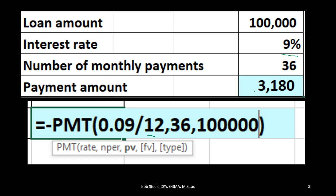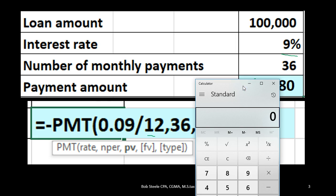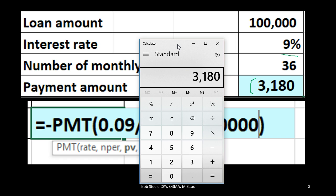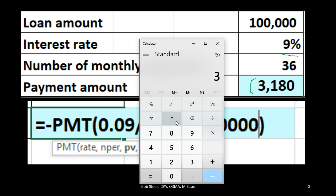I want to derive the payment amount ourselves because it'll help us tie it out to the amortization schedule. In practice, whoever you're negotiating a loan with will likely just give you the payment amount. What you want to know, of course, is how much interest you're paying — that is, how much more you're paying than the original loan amount. If we pay $3,180 times 36 payments, that's $114,480 minus the original $100,000, meaning we pay $14,480 in total interest over the three-year life of the loan.